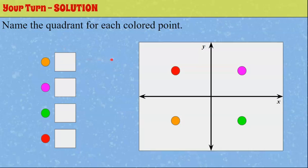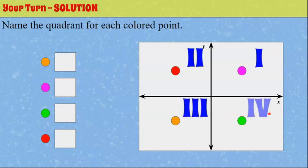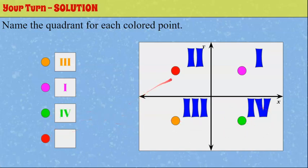Welcome back. The first thing I want to do is label my coordinate plane so I have a visual. So we start in quadrant one, two, three, four using Roman numerals, and now I can go find them. The orange point is in quadrant three. The pink is in quadrant one. The green is in quadrant four. And the red is in quadrant two. I named my quadrants first, then filled in the blanks — just a strategy.